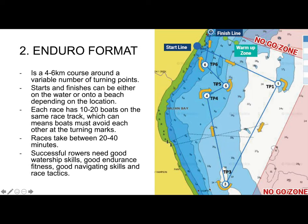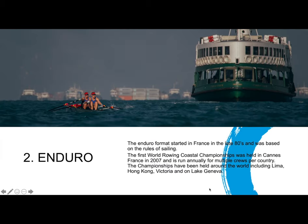There's a lot of full contact going on in the endurance format. It started in France in the late eighties and was based around the rules of sailing. The first World Rowing Coastal Championships was held in Cannes in France in 2007, and it's been run annually in multiple countries around the world — from inland lakes like Lake Geneva, to full ocean conditions in Lima, to active ports in Hong Kong.